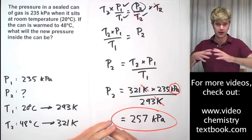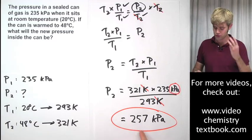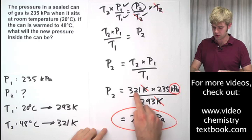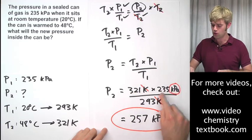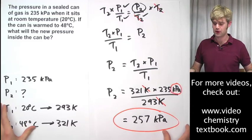So we know that our final answer is going to be 257 kilopascals. And again, I rounded this answer, my calculator spit out a very long number for this, but I rounded it to three significant figures because there are three significant figures in each one of the numbers that I started with. So that's how we do that.